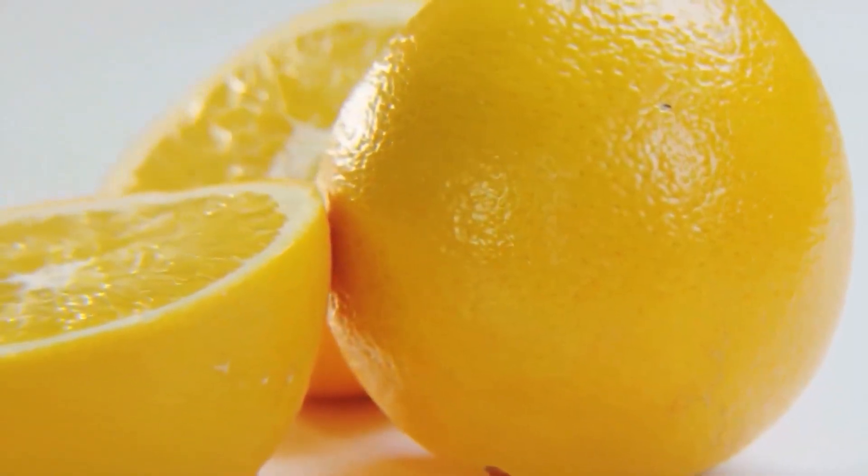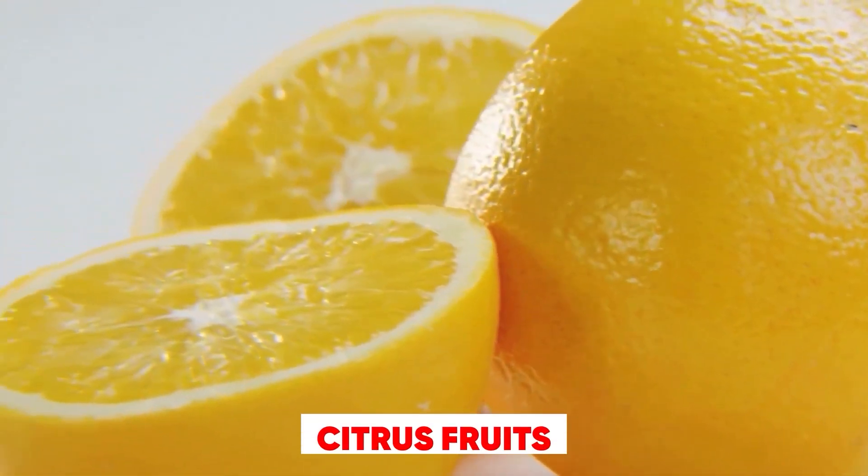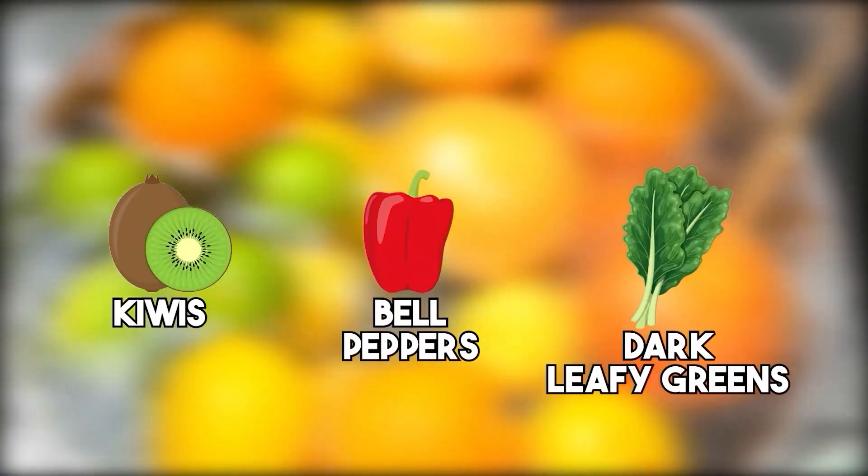You can find vitamin C in plenty of delicious foods including citrus fruits like oranges and lemons, strawberries and kiwis, bell peppers, dark leafy greens like kale and spinach.